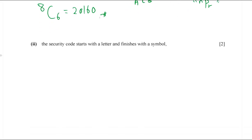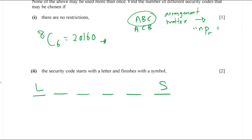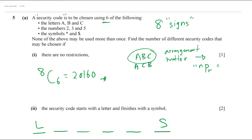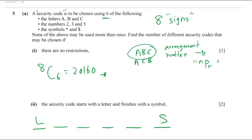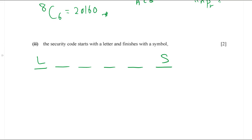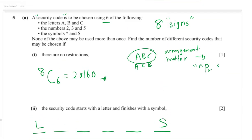For part two, the security code must start with a letter and end with a symbol. We have six positions in the code. I first check how many letters there are — there are three letters. So from three letters I choose one for the first position: 3P1. There are two symbols, so I choose one for the last position: 2P1.